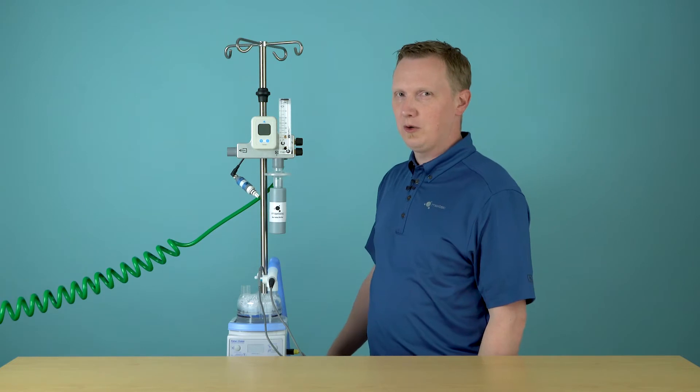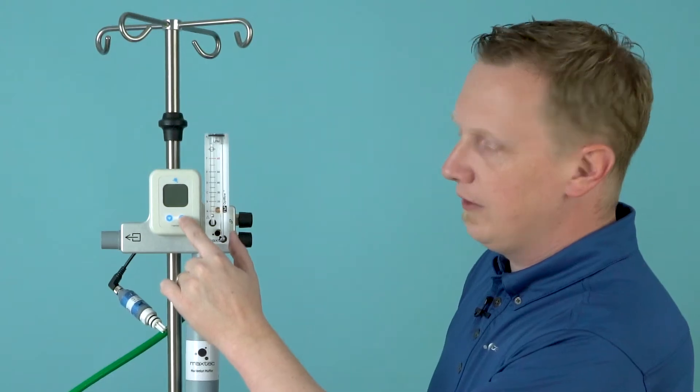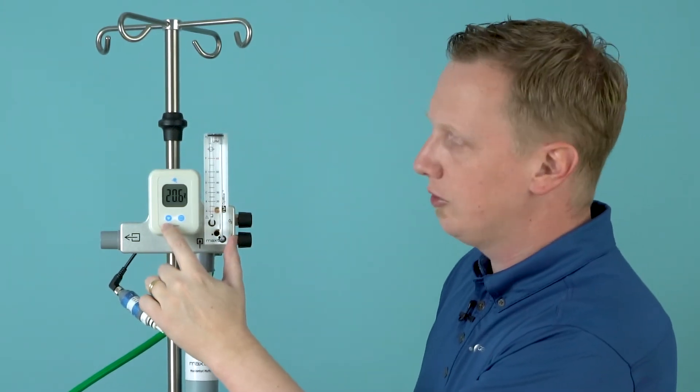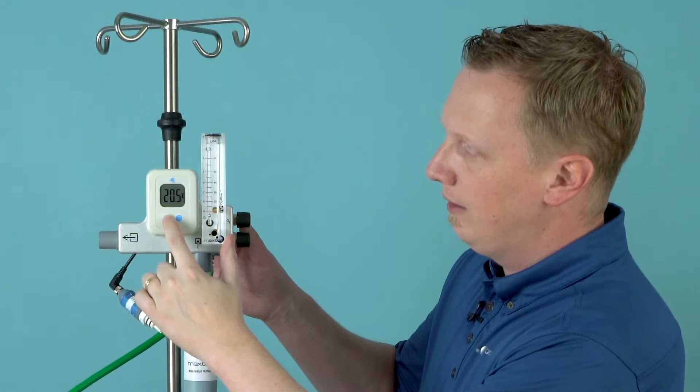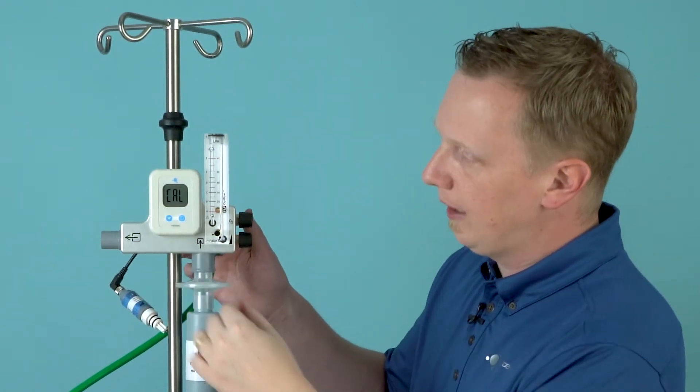For our demonstration purposes right now we're going to go ahead and continue. Next you'll want to turn the device on if it isn't already, and then the calibration button, the one with the little triangle, we're going to hold that down for three seconds and you'll see CAL appear on the screen letting you know it's performing a calibration.